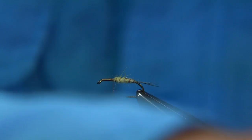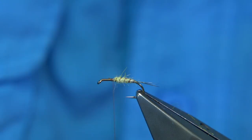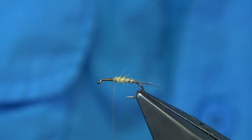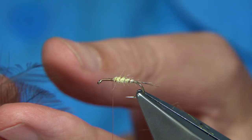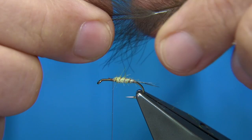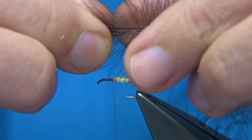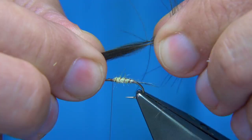Now, I'm using some CDC, natural colored CDC. Two to three feathers, depending on the size of the fly, or the size of the feathers. And these are quite small, so I'm putting three on together. Three, the CDC. So, I stroke back what I don't want. And pull this into the tips. Keep them nice and tight. Come around, catch them in. Two or three turns.